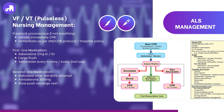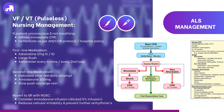Post-resuscitation care: if return of spontaneous circulation is achieved, post-resuscitation care should be initiated. Review and address potential reversible causes of the arrest. If sinus rhythm is re-established and it is deemed appropriate, an amiodarone infusion may be ordered due to its action to reduce the irritability of cardiac cells and help prevent further arrhythmias. However, remember that it is incompatible with saline, and an alternative fluid like 5% dextrose should be used instead.